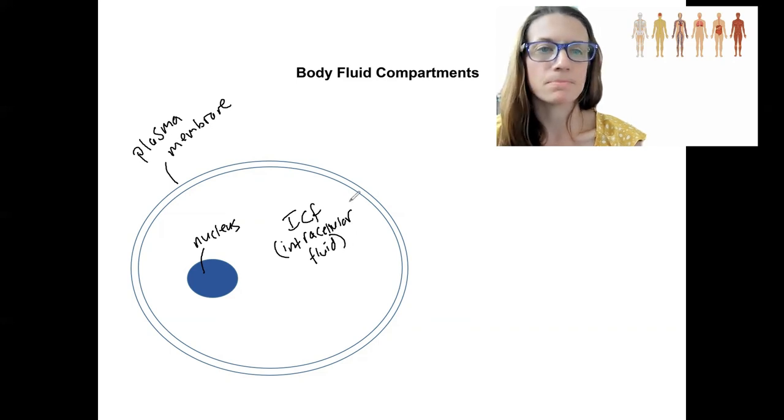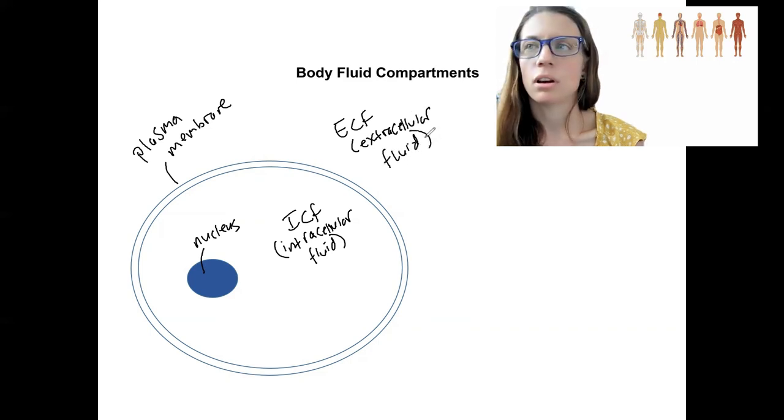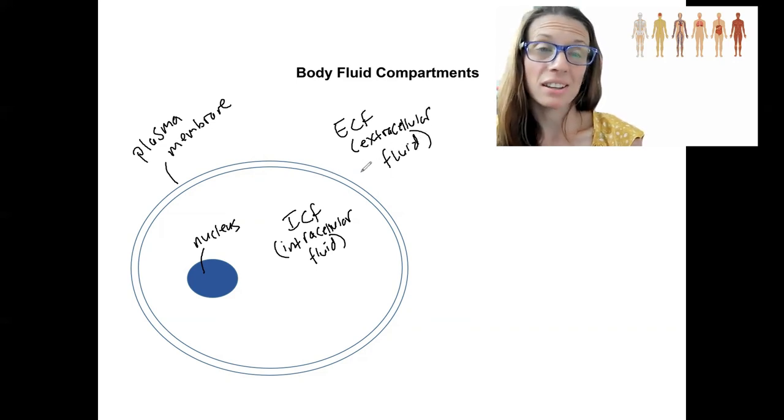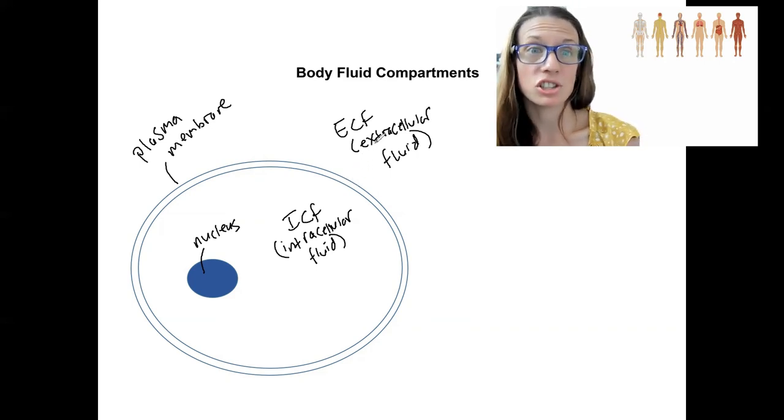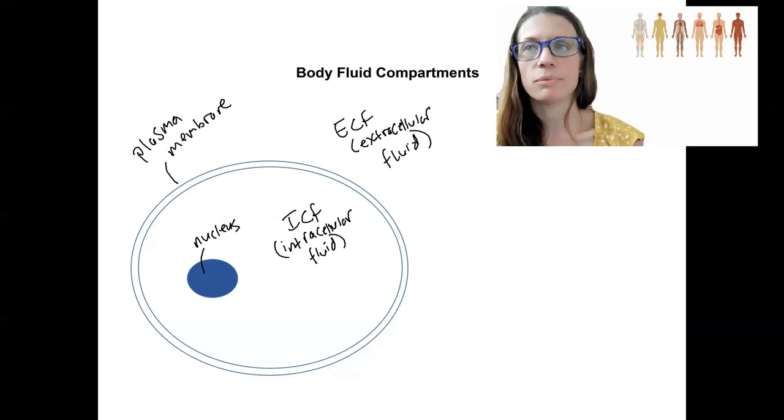This is cellular fluid inside the cell. It exists. Then what do you think we have out here? ECF, which is extracellular fluid. Awesome. So this plasma membrane is important for separating these two fluid compartments and these two fluid compartments have different compositions. And that's going to be really important for functioning of our nervous system and really all of our cells.